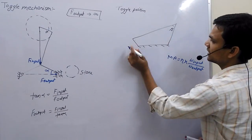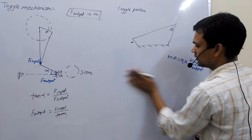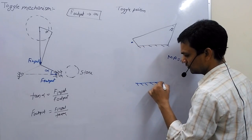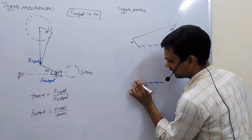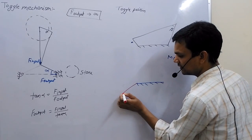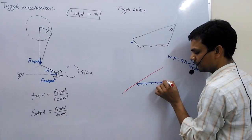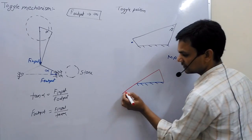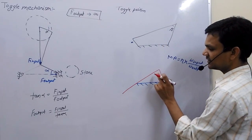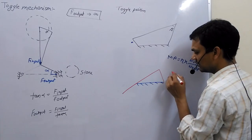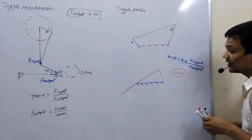Now, in this position, when this input link comes down — you can see — when this crank comes to this position and this coupler overlaps this link, the angle between the coupler and the input link will be zero. Then it is the extreme position of the output link, and here the value of omega will be zero, so mechanical advantage tends to infinity.